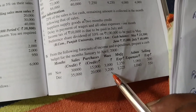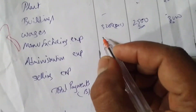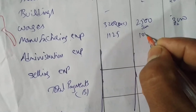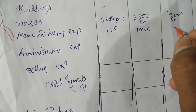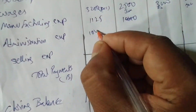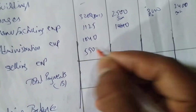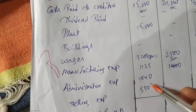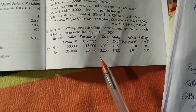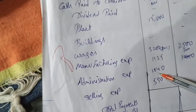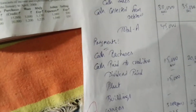For January, we write December's expenses: manufacturing 1,125; administration 1,040; selling 550. These are December month expenses paid in January.